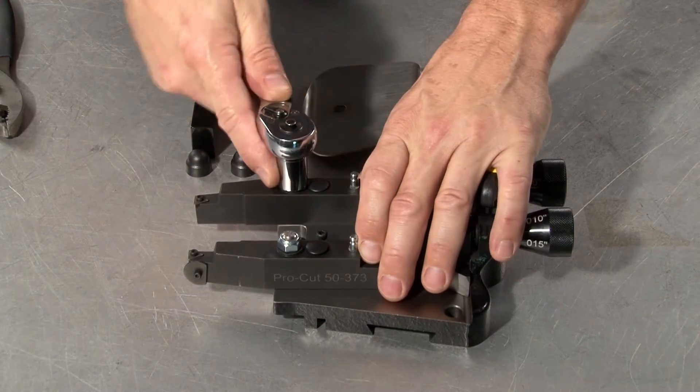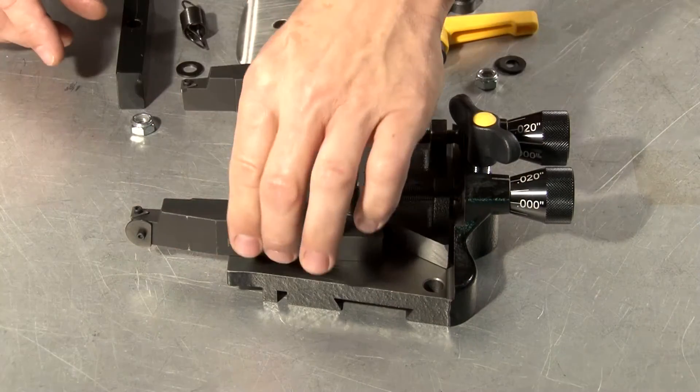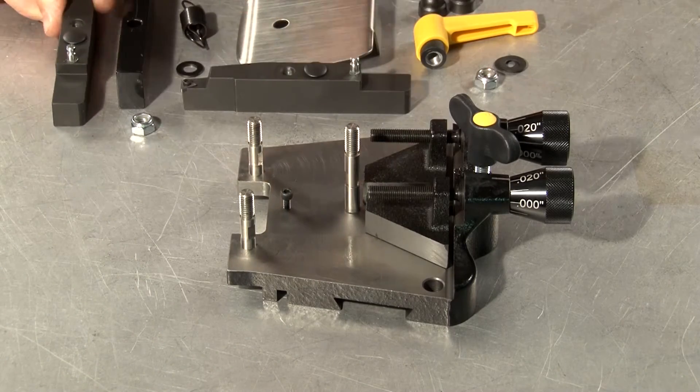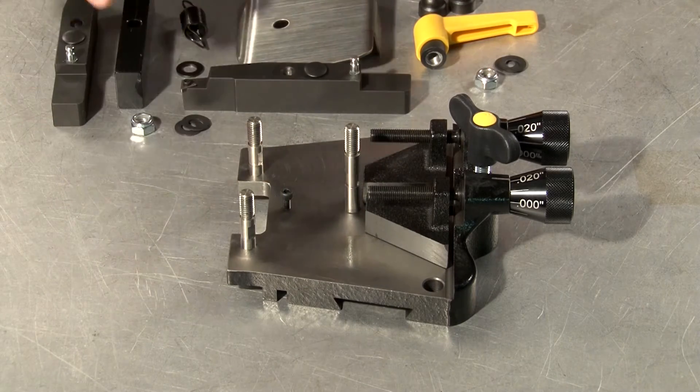Next, remove the nylon lock nut that holds down each tool arm and remove the two Belleville washers, taking special care to see how they are stacked.